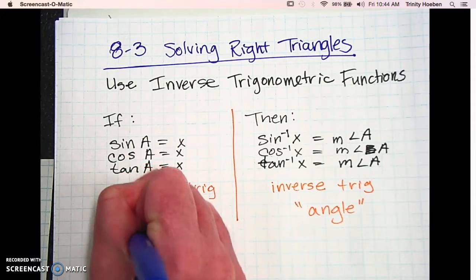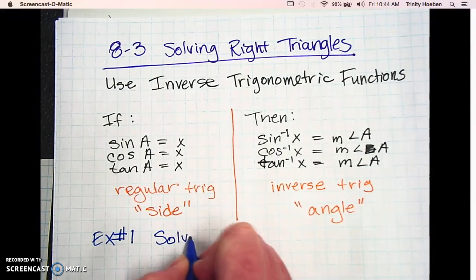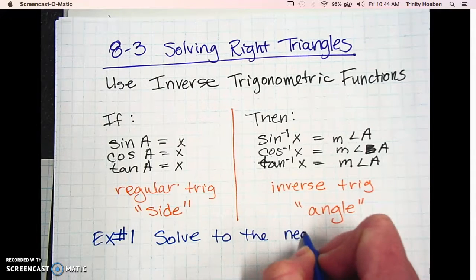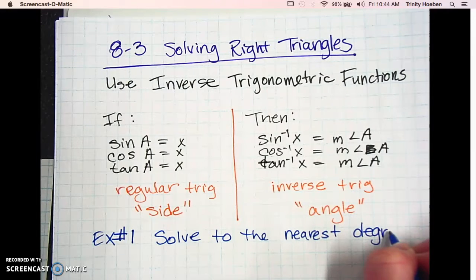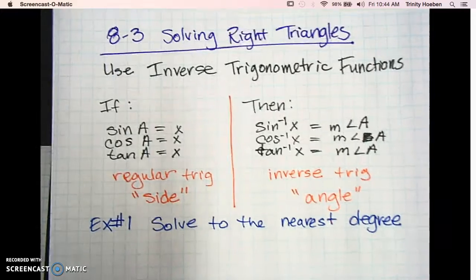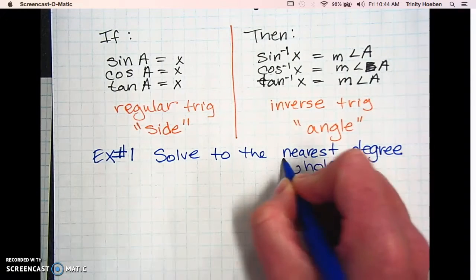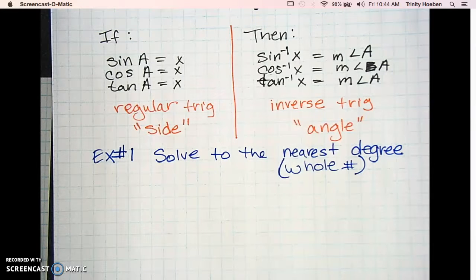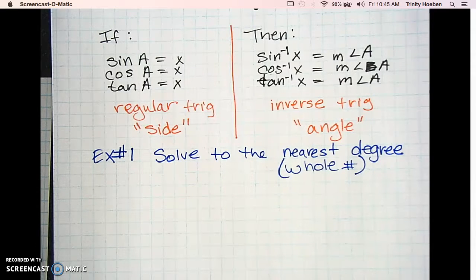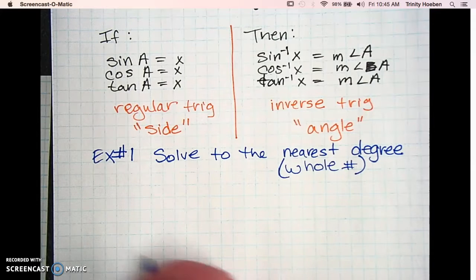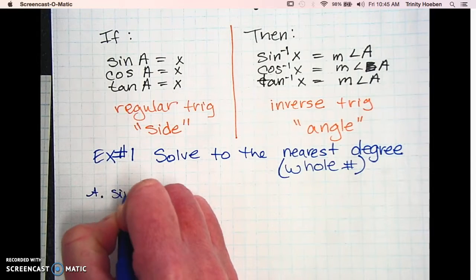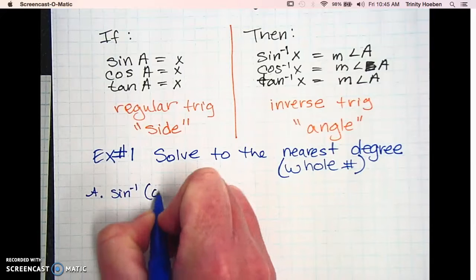Here is what it looks like in an actual problem — example number one. We're going to solve to the nearest degree. Nearest degree is going to be a whole number, because sometimes it will give you the answer with a decimal. But you're going to round it to the nearest whole number, like 16, or 25, or 87 — not 16.732, just 16. So let's try it with three little examples. We'll call this little letter A: we're going to take the inverse function of sine of 0.85.